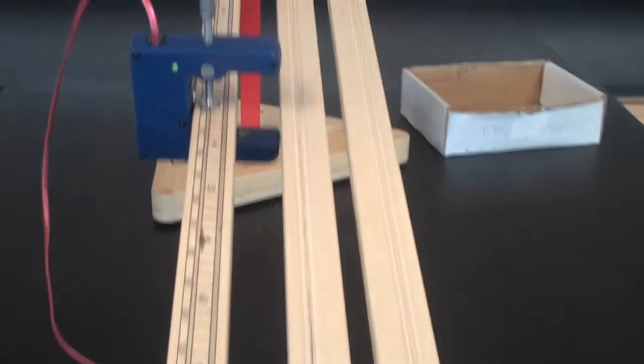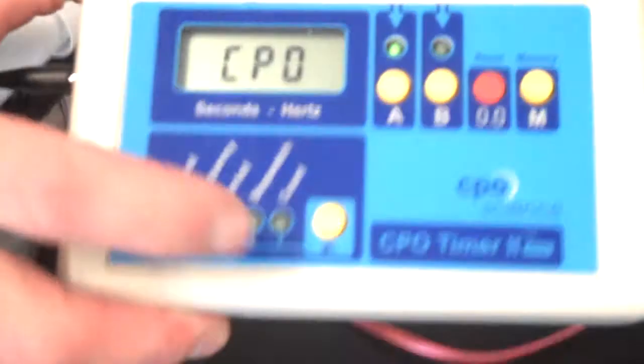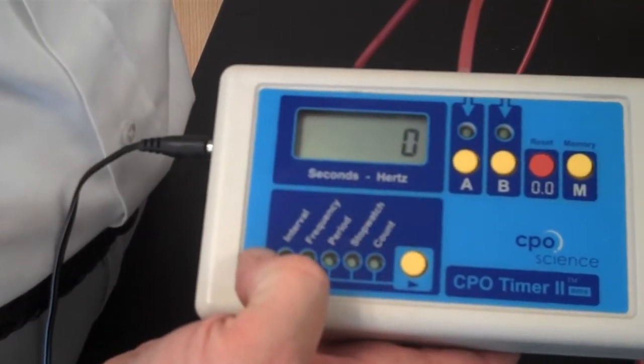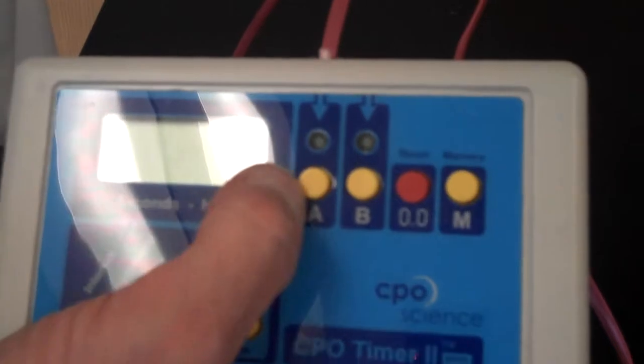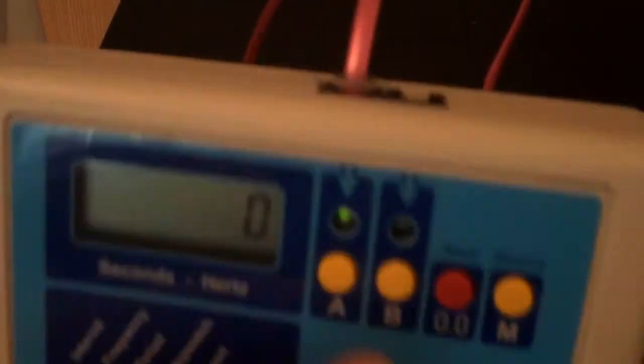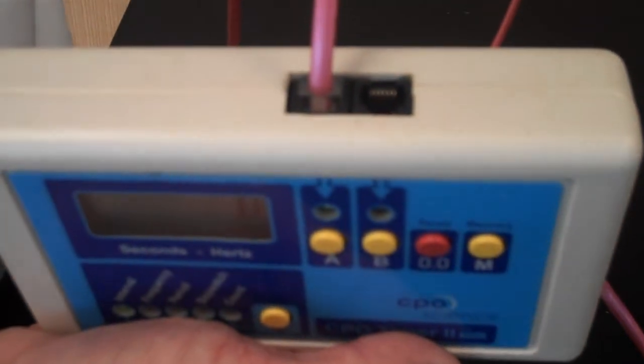We're going to show you how to actually time something now. We're going to use a car on a ramp. On the timer, I'm going to set the timer down here to interval with the yellow button. If it's not on interval already, I'm going to make sure that the light is on under red because that's where the jack is plugged in.